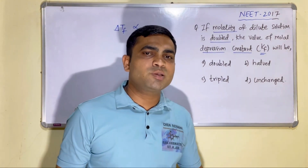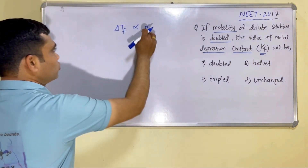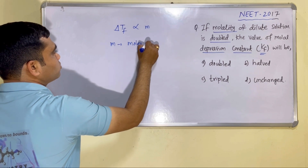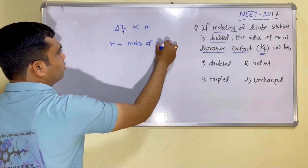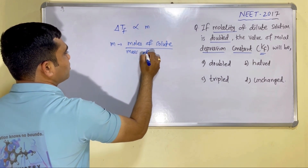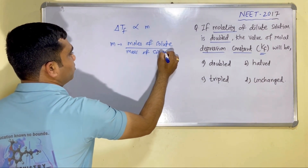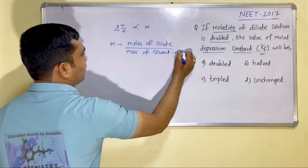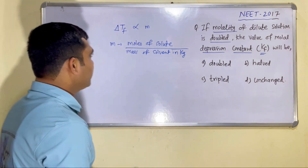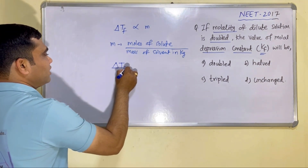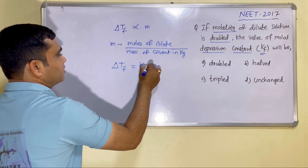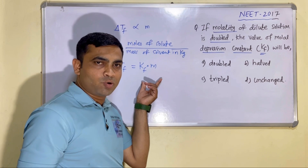Delta Tf is proportional to molality of the solution. Molality is nothing but moles of solute per kilogram of solvent. So if I replace the proportionality sign, I will put a constant of proportionality: delta Tf is equal to Kf into molality, where Kf is actually a constant of proportionality.